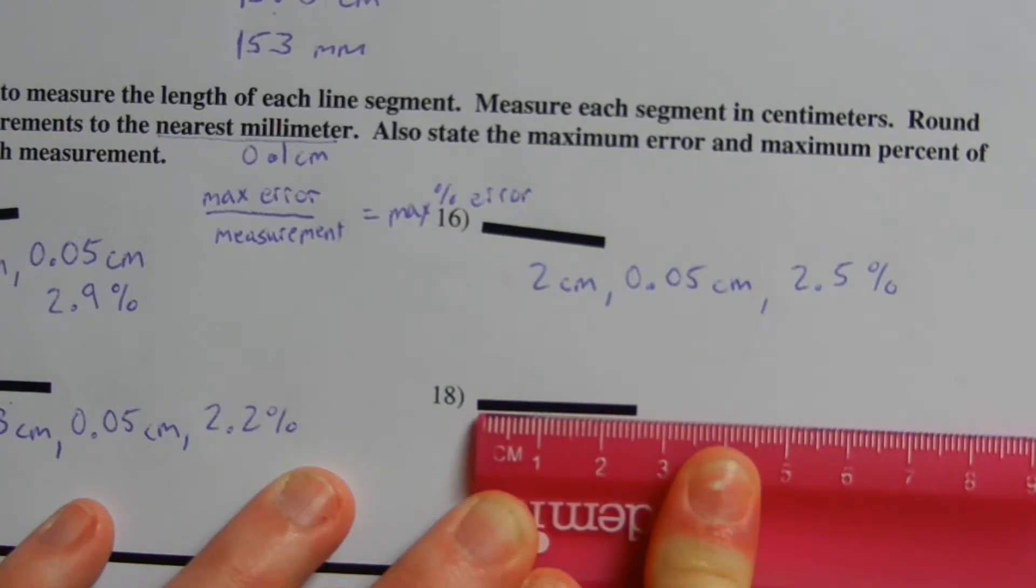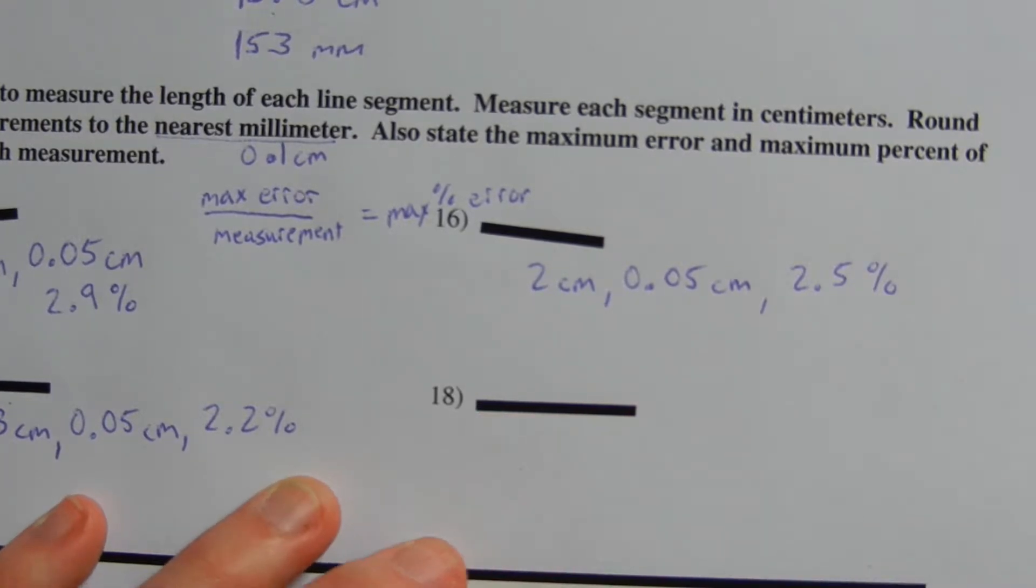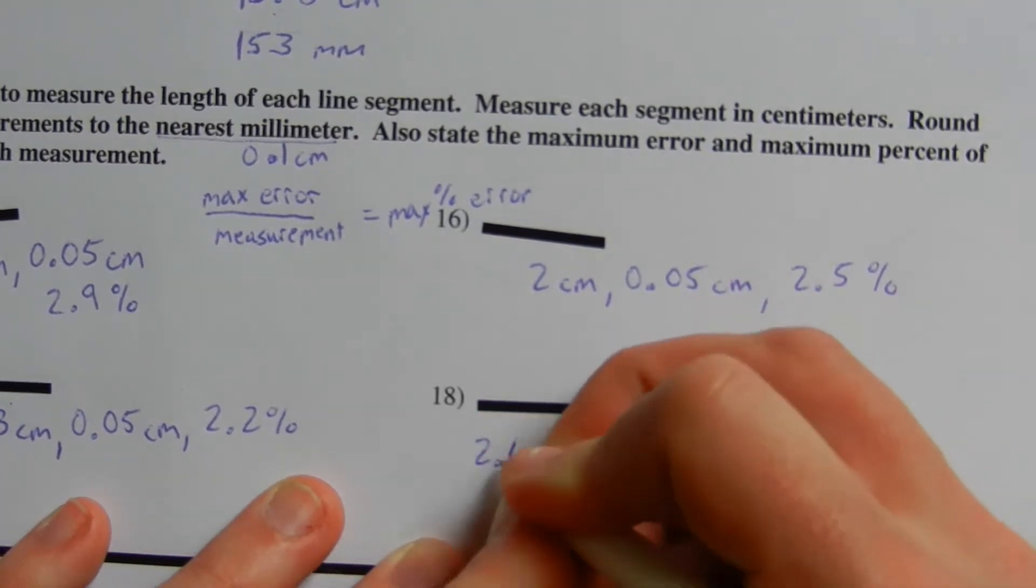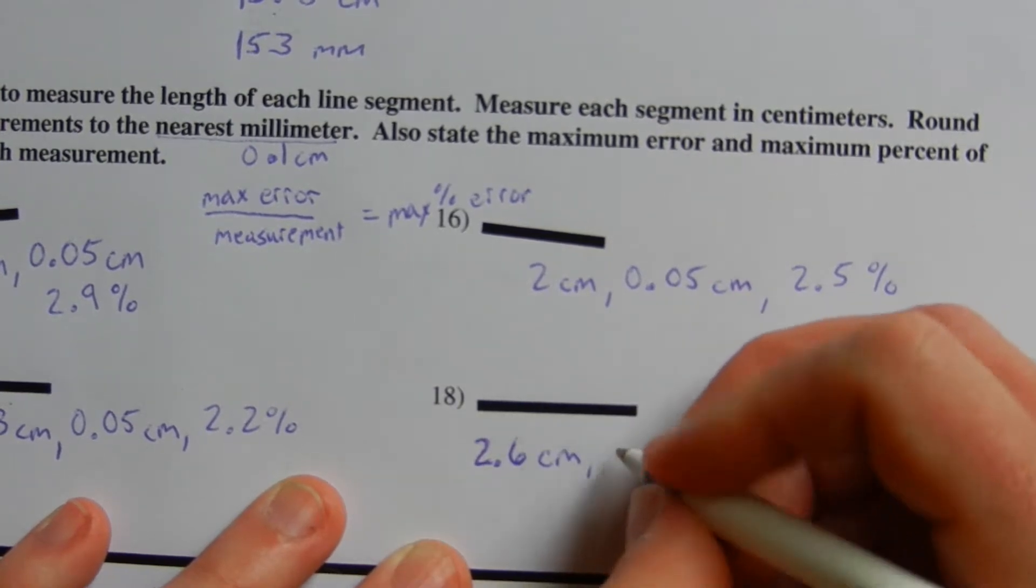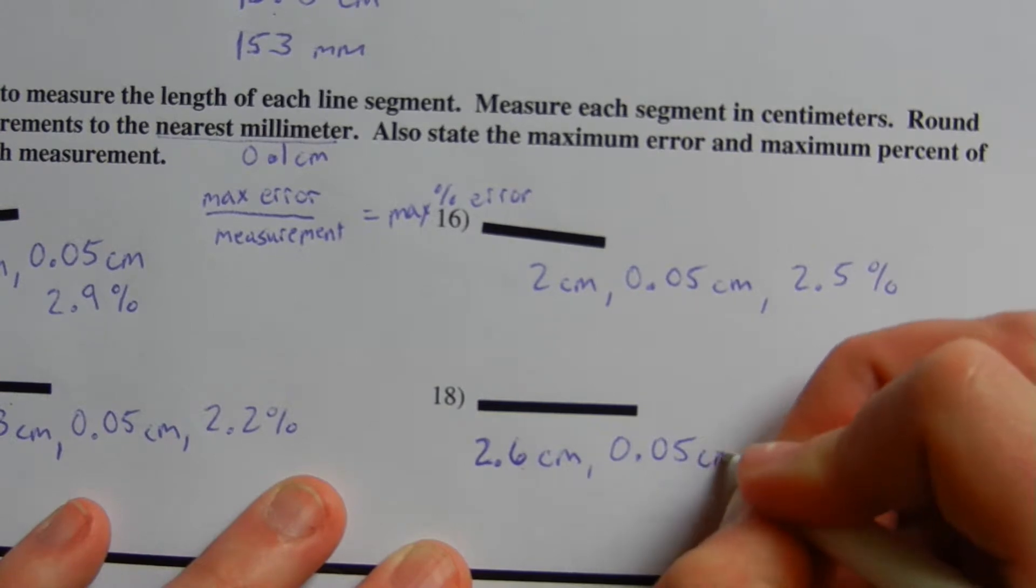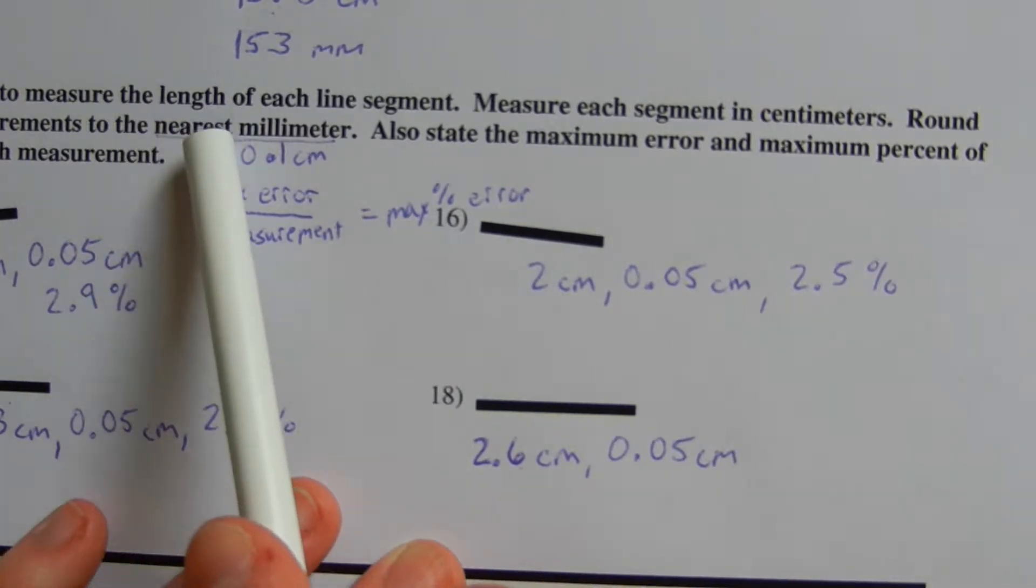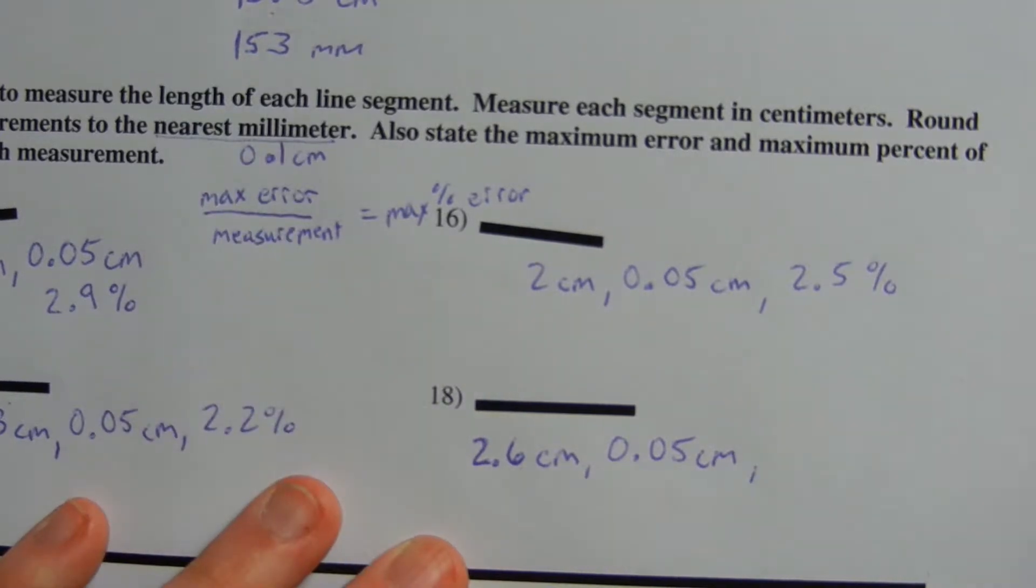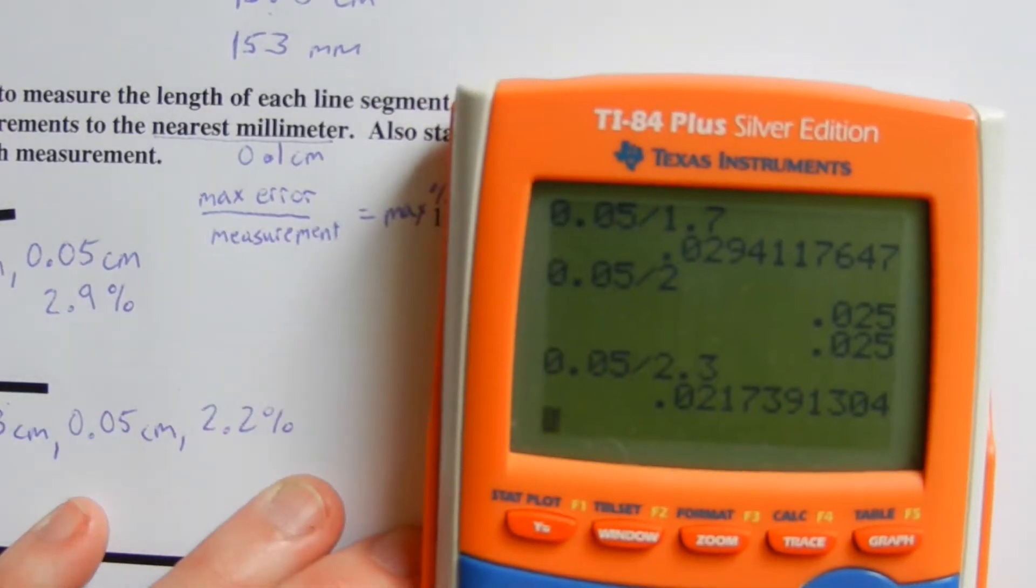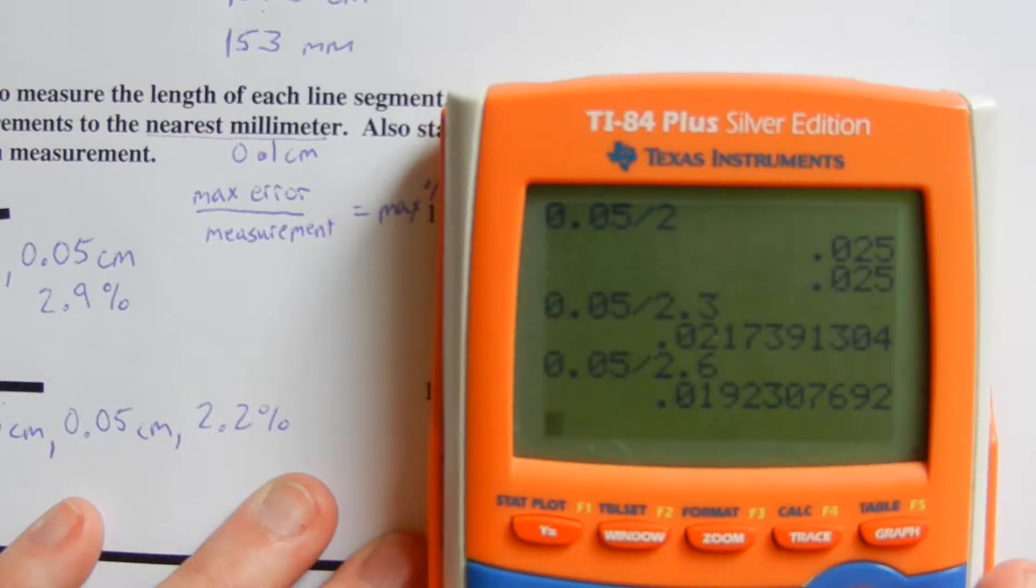For number 18, we're 6 millimeters past the two, so that's going to be 2.6 centimeters. Our max error is the same as the previous three, 0.05 centimeters, since we're rounding to the nearest millimeter. So now we're going to take that 0.05 and divide it by 2.6. That's going to give us 0.019, which is about 1.9%.